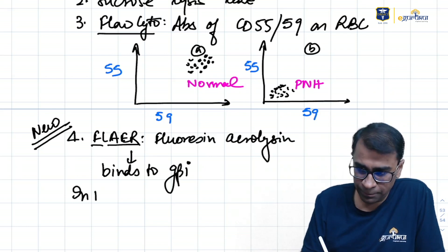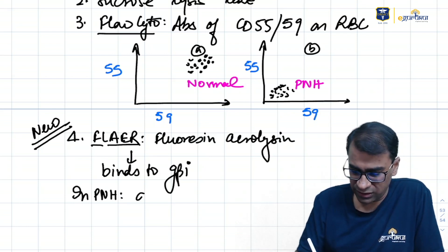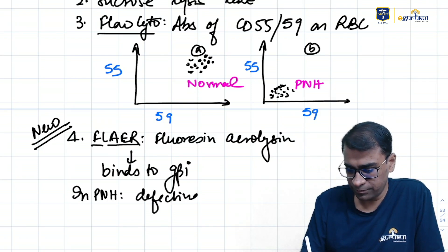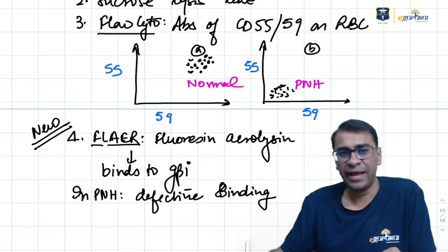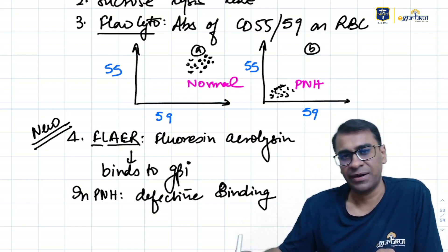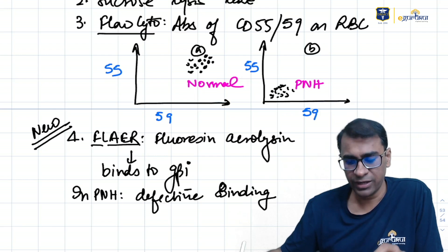So in PNH, there is defective binding. In PNH, there is defective binding.